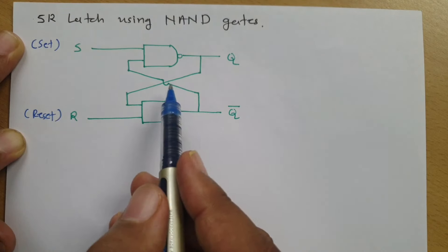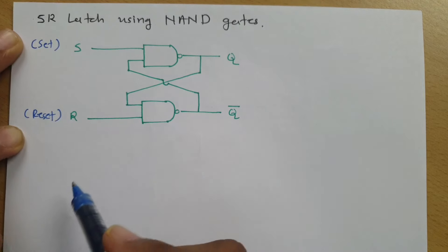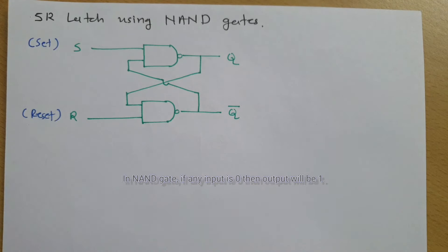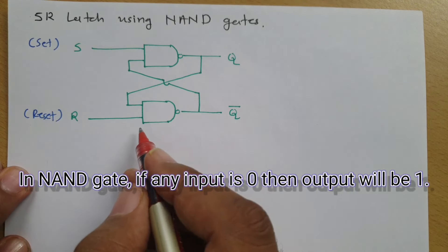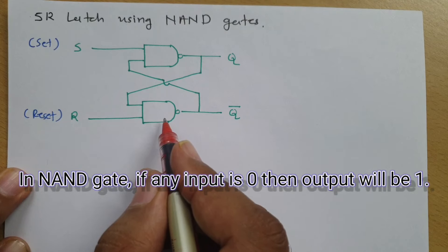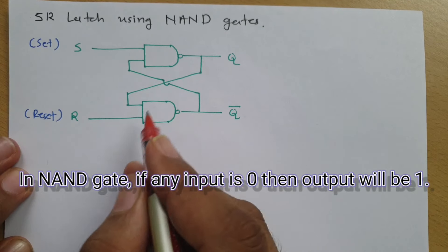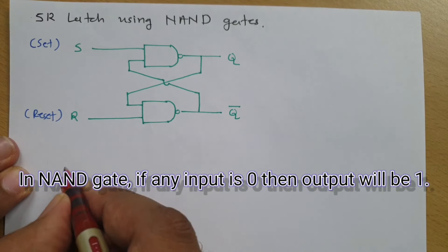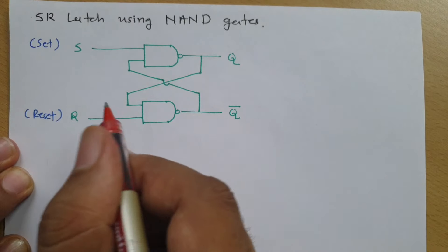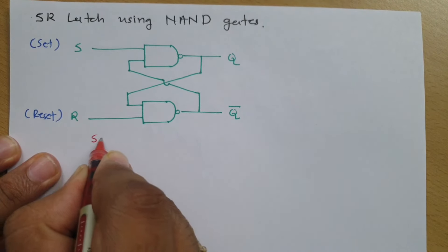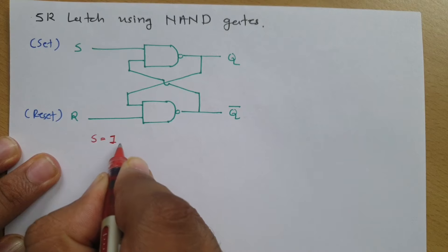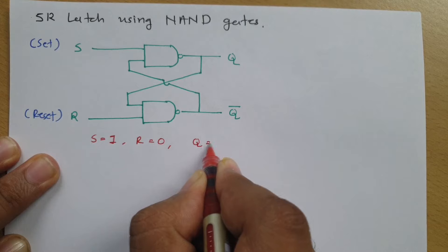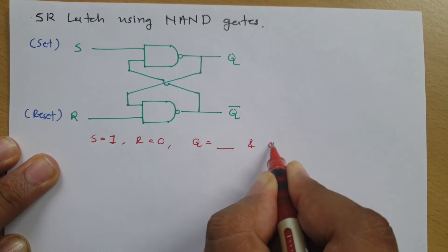To understand the working of SR Latch using NAND gate, one should know the basic operation of a NAND gate. In a NAND gate, if any input is 0 then the output will be 1. So to understand the working of this circuit, let us consider the first state where input S equals 1 and R equals 0, and we need to identify what will be the output Q and Q-bar.